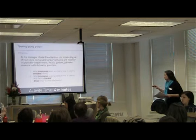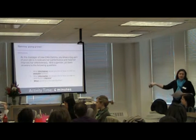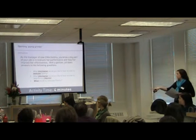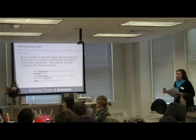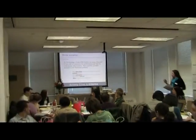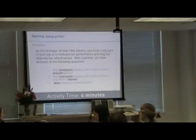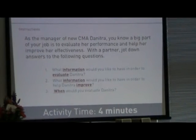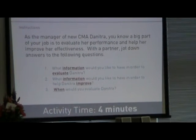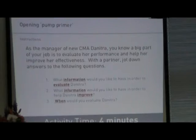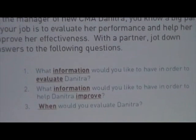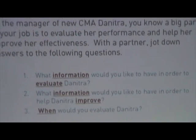With a partner, take four minutes to jot down your answers to these three questions: What information would you like to have in order to evaluate Dimitra? What information would you like to have in order to help her improve based on what you learned? And number three, when would you do this? So with a partner, four minutes brainstorming answers to these questions.